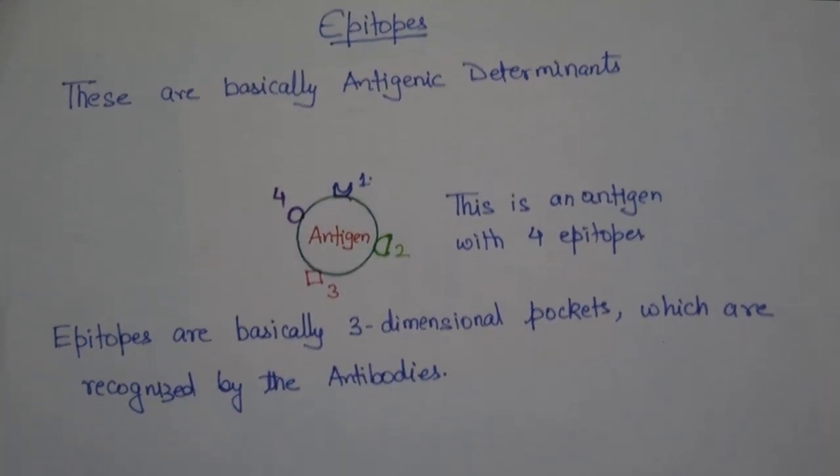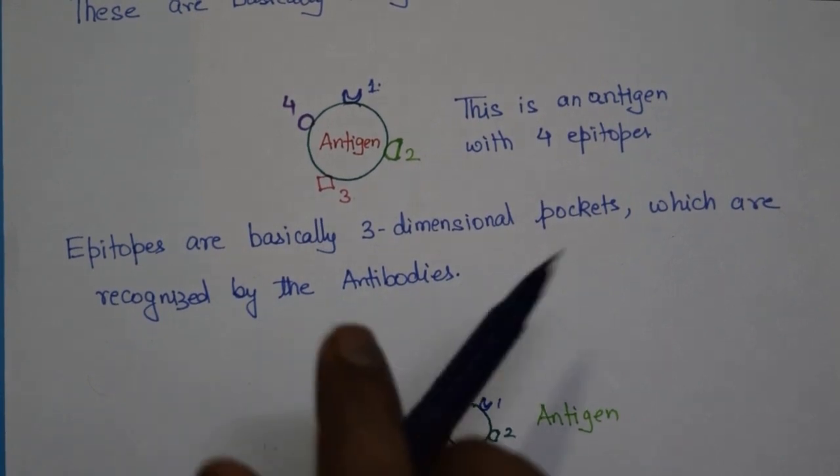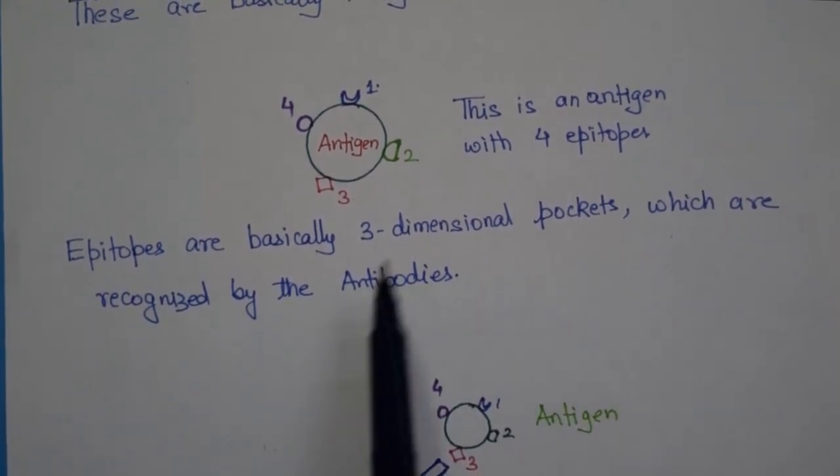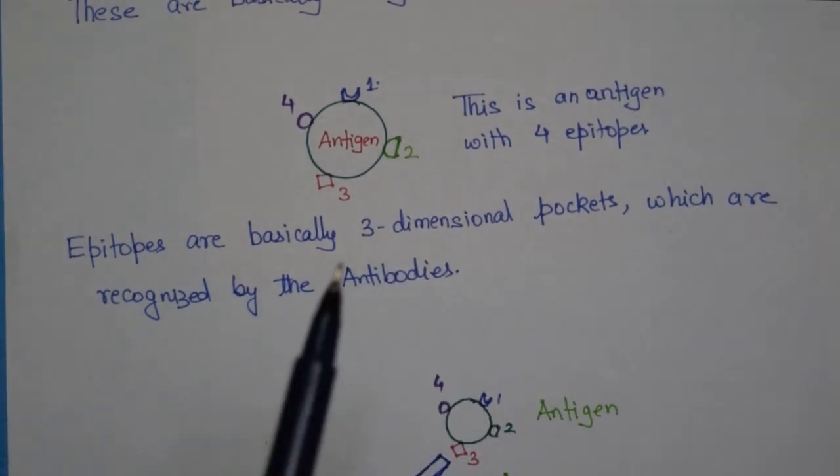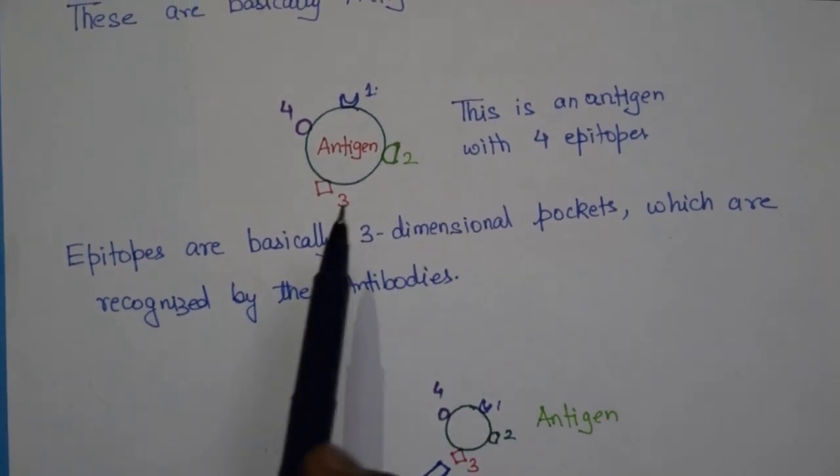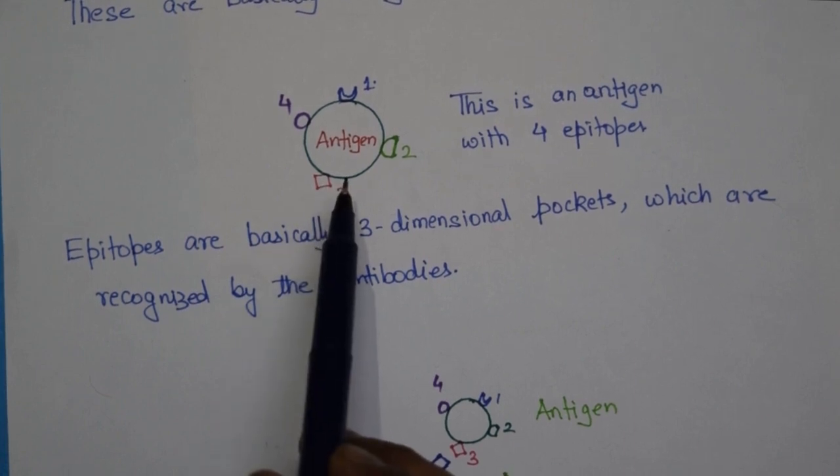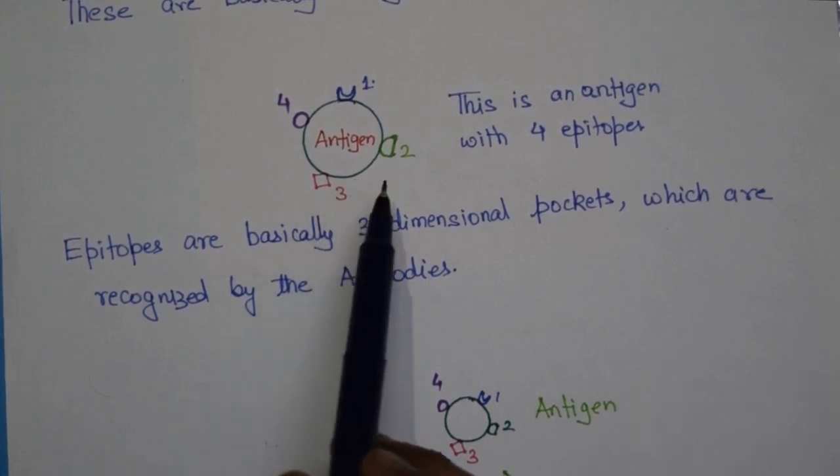Now epitopes are three-dimensional pockets which are recognized by antibodies. First thing I will like to make it very clear that epitopes can be pertaining to your B cell or they can also be pertaining to a T cell.